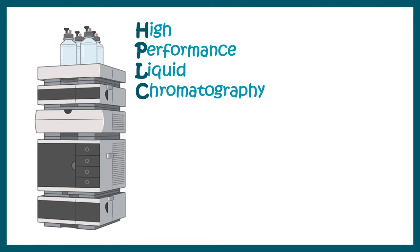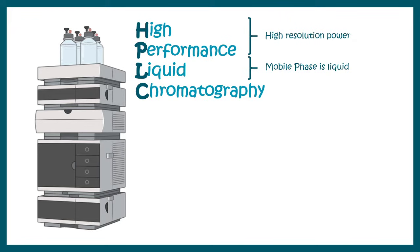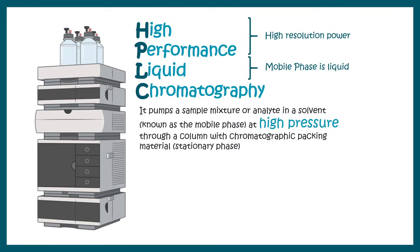In this video we'll talk about high performance liquid chromatography. Let's analyze the name first: 'high performance' tells us that this chromatographic technique has high resolution power. 'Liquid' means the mobile phase used is liquid. So HPLC is a chromatographic technique with very high resolution, where the liquid mobile phase is passed through a column under very high pressure. We'll understand why it's high performance, how it works, and its advantages and disadvantages.